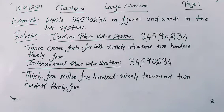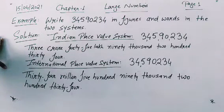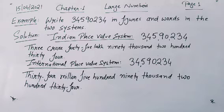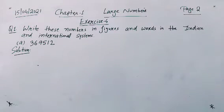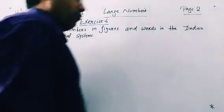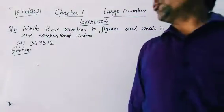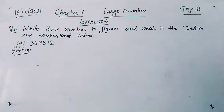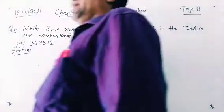I think students it is now clear. If you have any doubt you can ask me. Now students we will start Exercise 4. This is Exercise 4, question number 1. Question number 1 says: write these numbers in figures and words in the Indian and international systems.